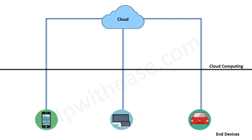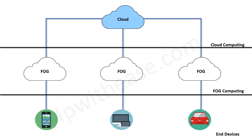As we can see in the scenario diagram, where we don't have a fog computing setup, the data is sent from IoT — Internet of Things — devices to the cloud directly. Fog computing uses nodes to evaluate information on the edge of the network without traversing it back to the cloud.